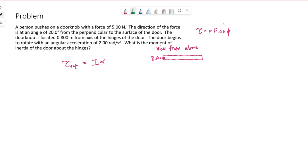I need to also represent the force that's being applied. Reading the problem again here, we're pushing on a doorknob. So here's a doorknob. We're pushing on the doorknob with a force of 5 Newtons, but it tells us the direction of the force is at an angle of 20 degrees from the perpendicular to the surface of the door.